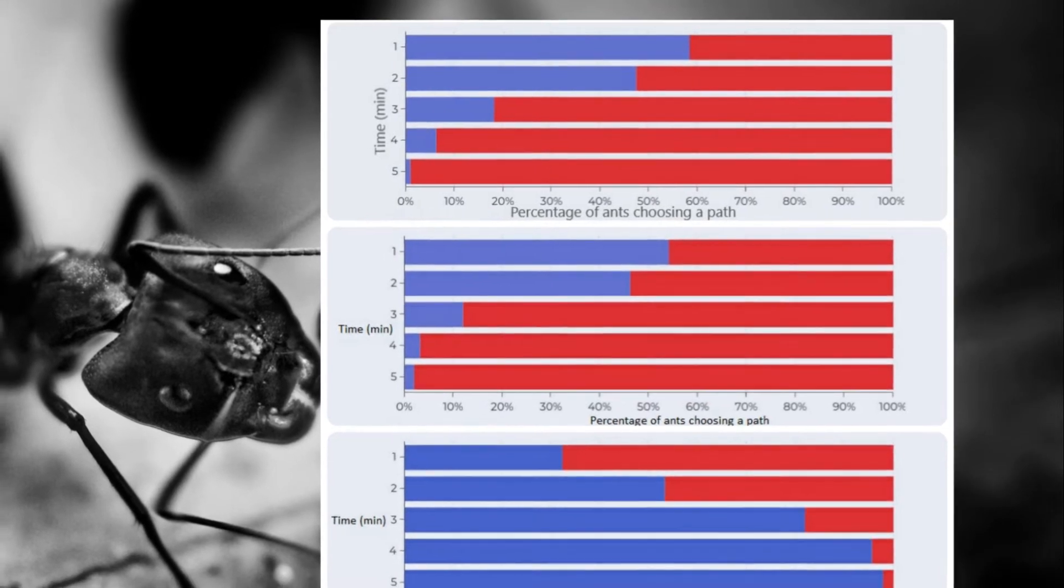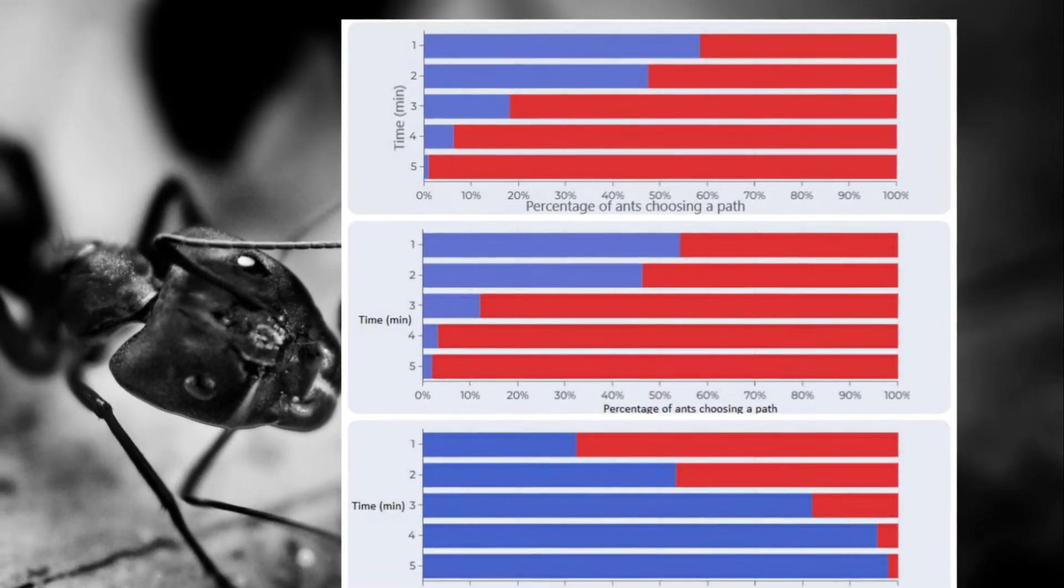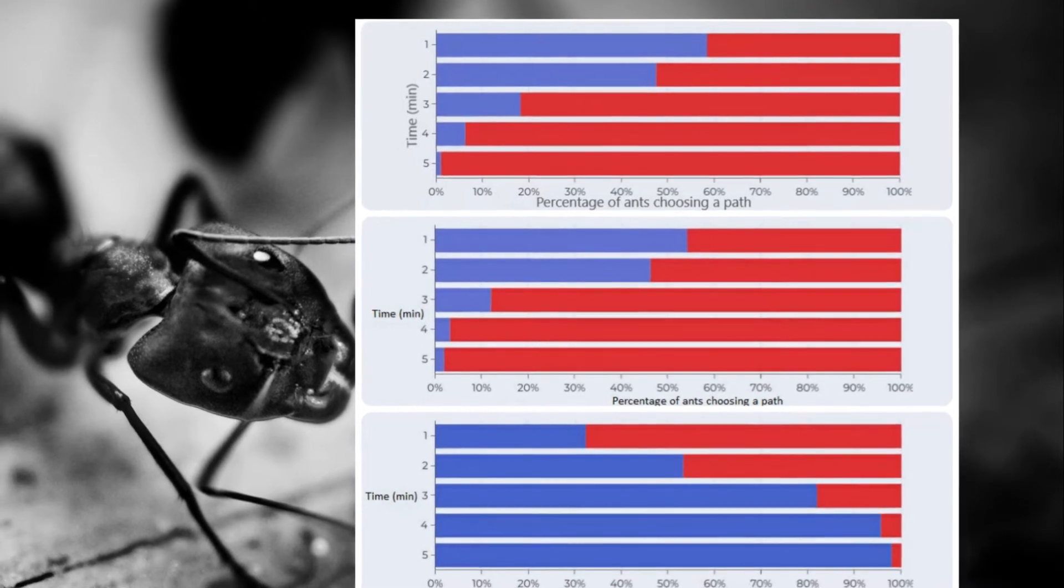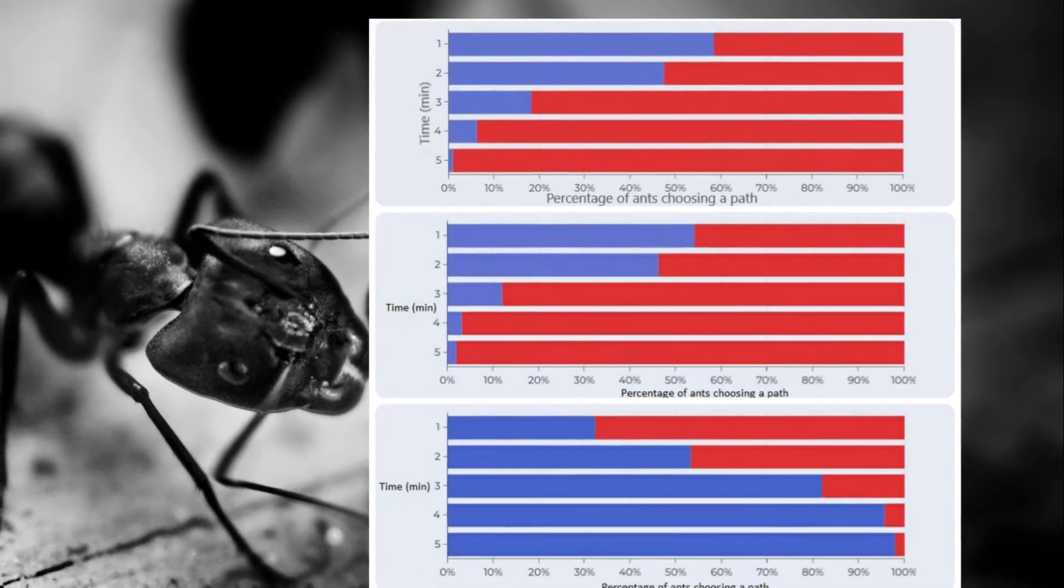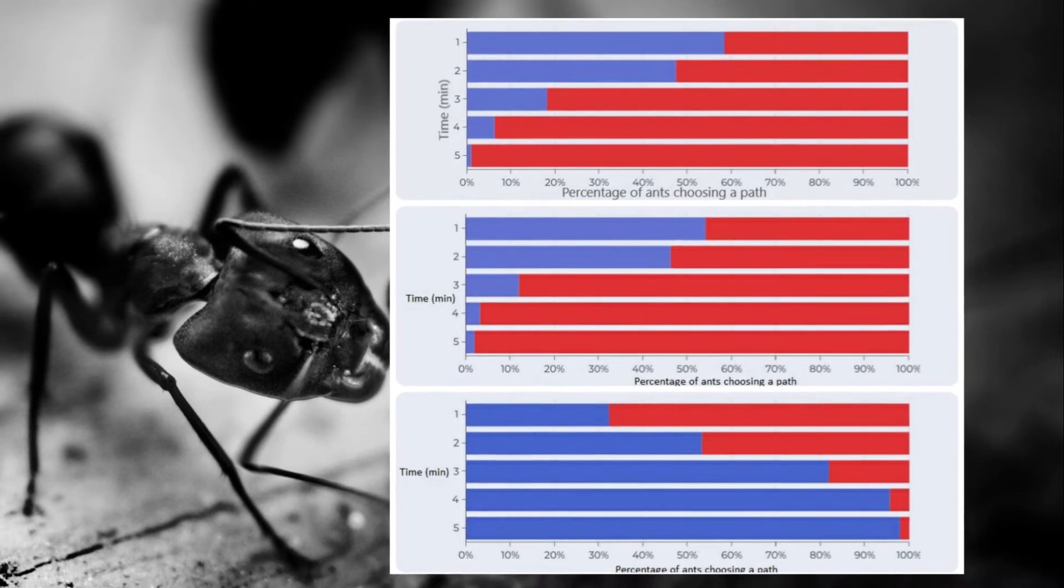In two out of three trials, the ants converge to path two. If enough trials are conducted, the ants converge to a particular path in 50% of trials when the paths are of equal length.